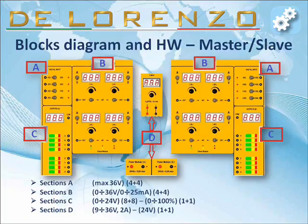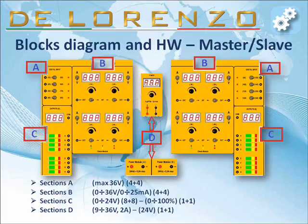Section A: sections of the digital inputs. Section B: sections of the analog voltage or current inputs. Section C: sections of the outputs with proportional measuring bar graphs and displays. Section D: sections of the power supplies, fixed and variable.